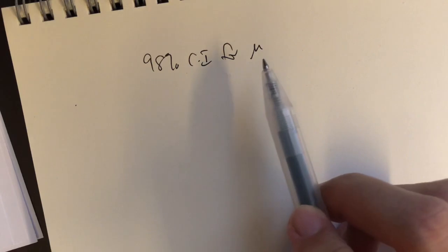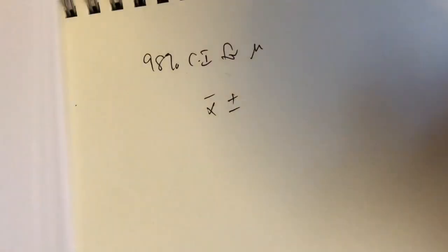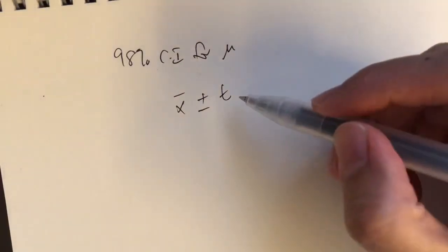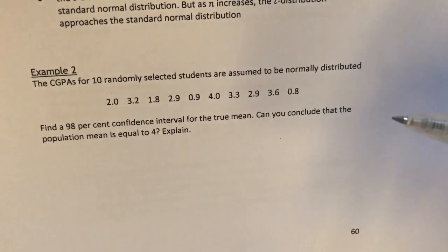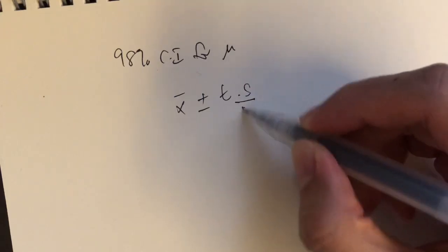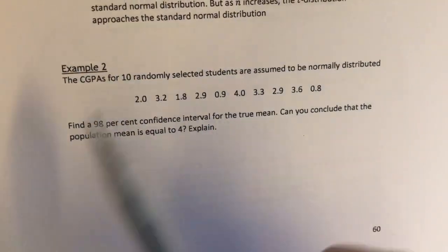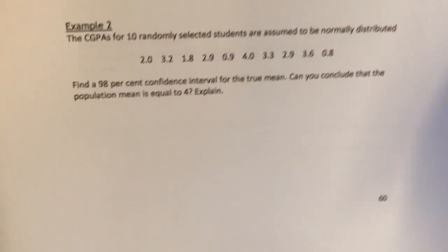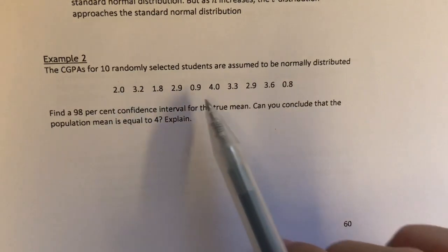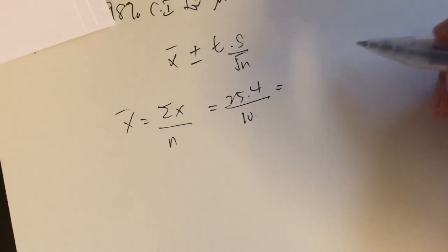We need to find the 98% confidence interval for mu. But this time we have a small sample size. The formula: the point estimate for mu is x̄, plus or minus. Because we have a small sample size, we need to use the T distribution. And since it's a small sample and we don't know the population standard deviation, we estimate it using s over the square root of n. So what do we need? We need x̄. We don't have x̄ from this question, so we have to calculate it first. x̄ is the sum of all x values over n: 2 + 3.2 + 1.8 + … + 0.8, all divided by 10. That gives us 25.4 over 10, so our sample mean is 2.54.